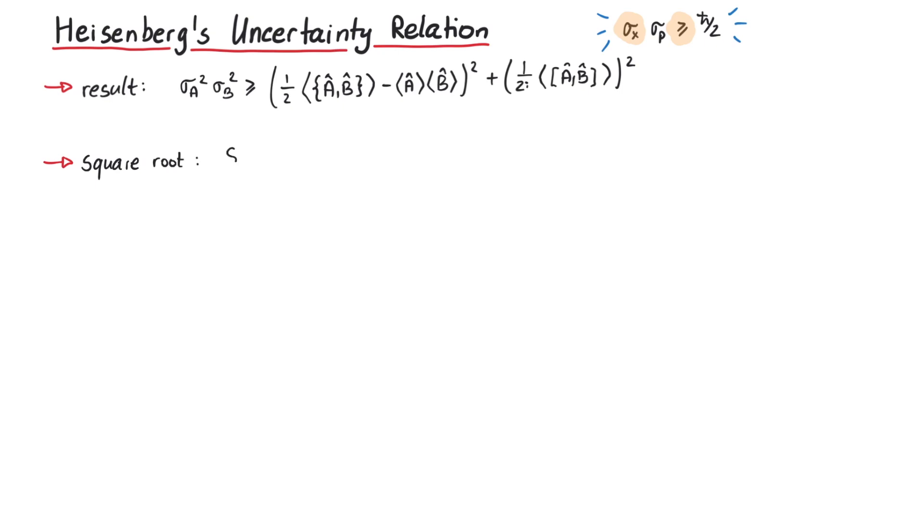If we take the square root of this equation, we get the so-called Schrödinger uncertainty relation.